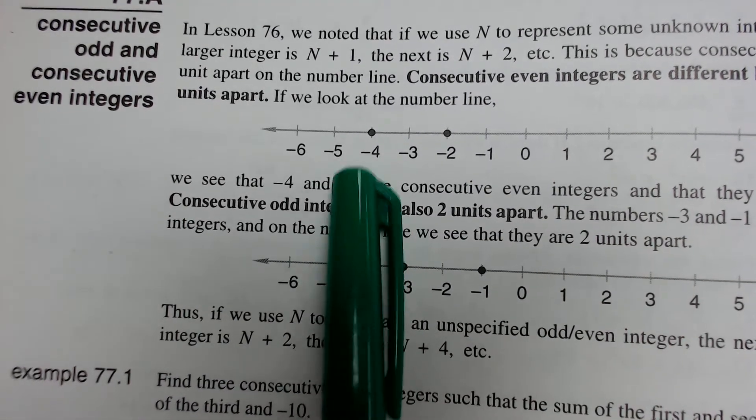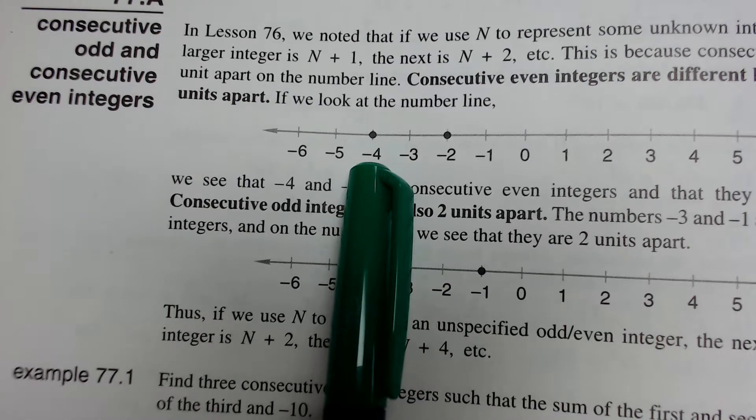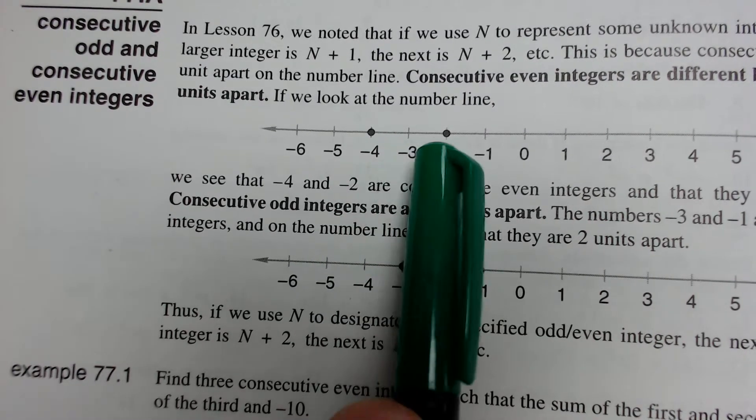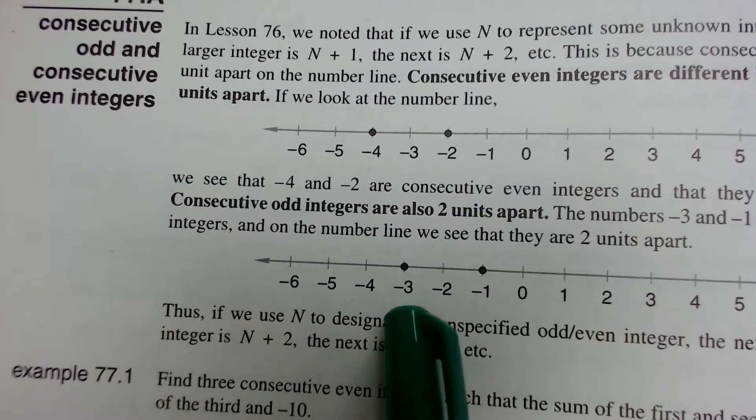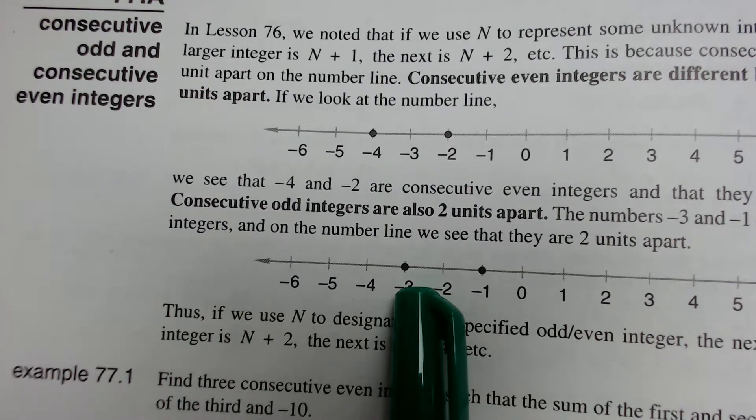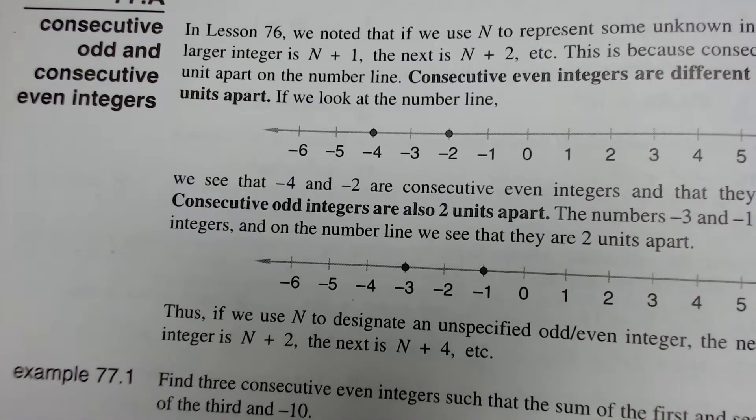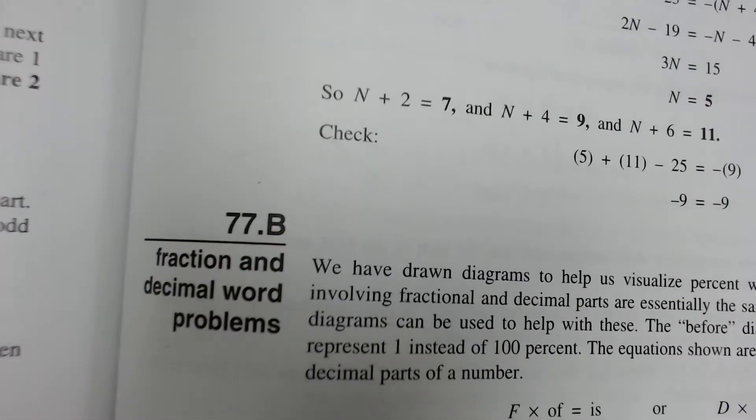And we see that here on these number lines. So, if we start with an even number, the distance to the next even number is 1, 2. Same thing with odd. If we start with negative 3, the next odd number is 1, 2. So, the distance between odd numbers is 2, and the distance between even numbers is 2.